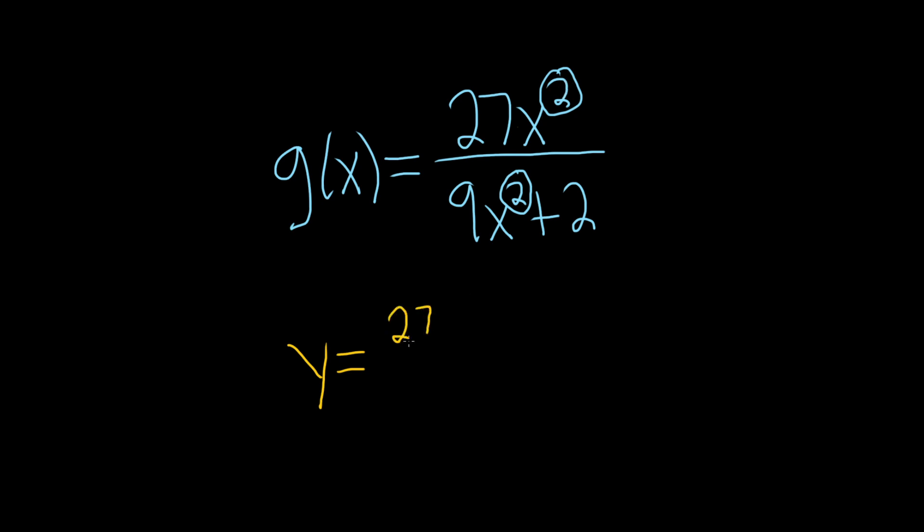So it would be 27 over 9. That's equal to 3. So the horizontal asymptote is y equals 3.